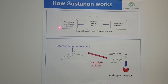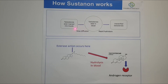When the testosterone is injected into the muscle — which can be the glute, thigh, or sometimes the shoulder if you've got big shoulders — it has to get from the muscle into the blood. This is the rate-limiting step because it diffuses slowly from the site of injection into the blood.